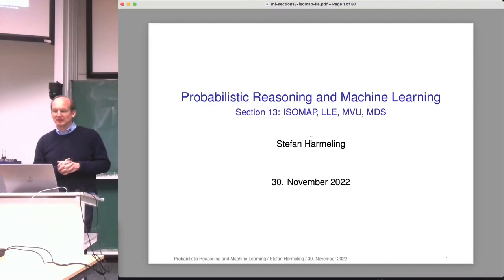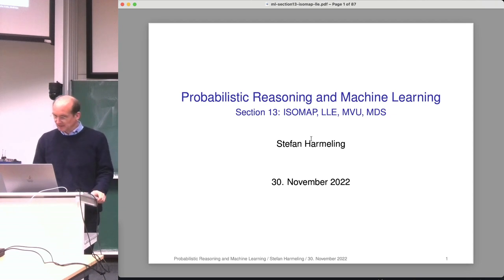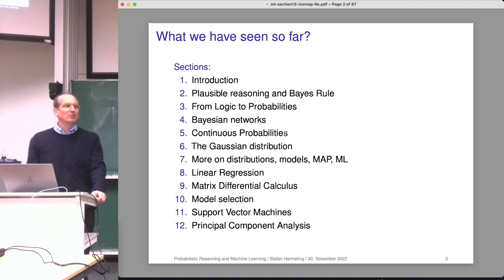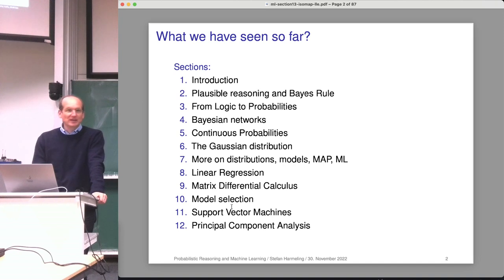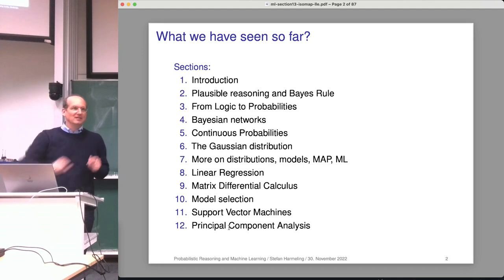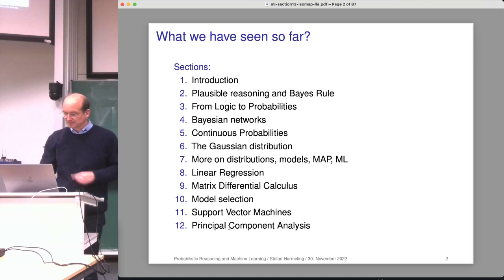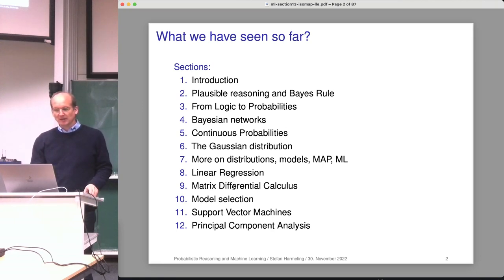Welcome everyone to our next lecture on probabilistic reasoning and machine learning. Today we continue with dimensionality reduction, but now look at some nice non-linear methods. So far, we started with lots of probabilities as the basis, did some matrix differential calculus, and after support vector machines and PCA and kernel PCA, today we look at non-linear alternatives for principal component analysis, which try to find the non-linear manifold in data.